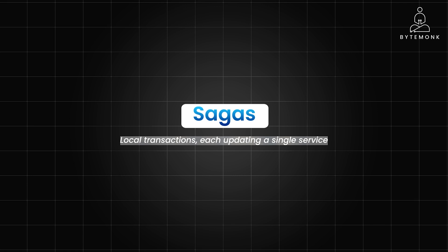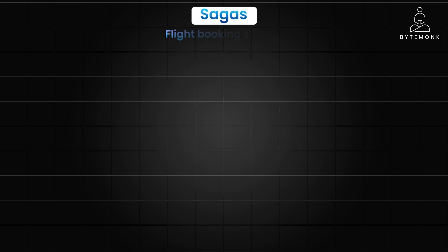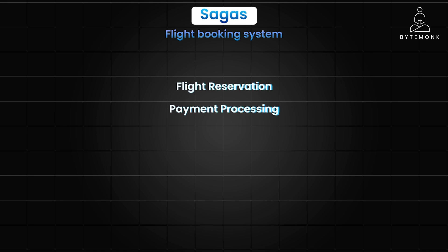Let's understand with an example. In a flight booking system, a single booking can involve multiple actions: securing a seat on the desired flight, charging the customer's credit card, reserving a hotel room if requested, booking a rental car, and sending a confirmation email to the customer. The problem is these actions often involve different services or systems, and if one of them fails, you don't want the customer to be charged without a flight ticket, or vice versa.